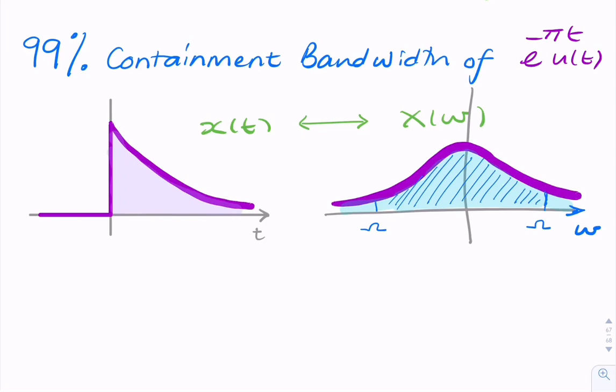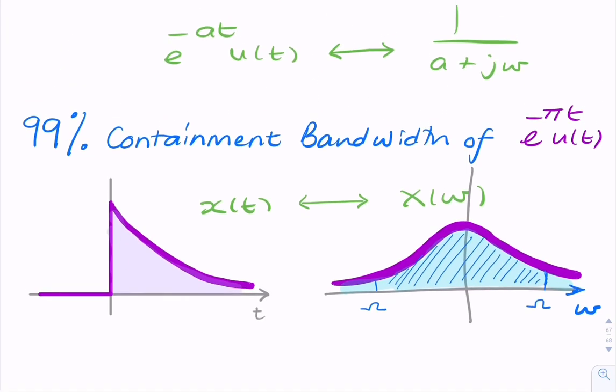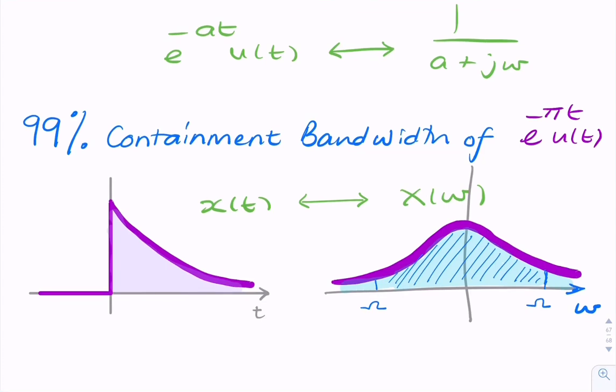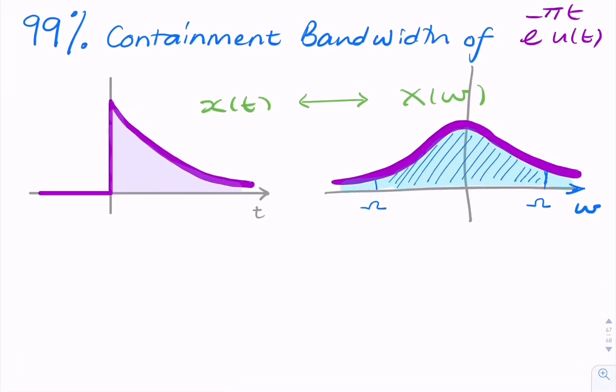So we can start with the Fourier transform pair, where the single-sided exponential we're given can be represented as 1 over a plus j omega. And that is helpful because we can say that the energy inside some frequency range omega is 1 over 2 pi, the integral from minus infinity to infinity. Actually, I'll remove the pi for a second, and here I can just say x(omega) squared d omega.